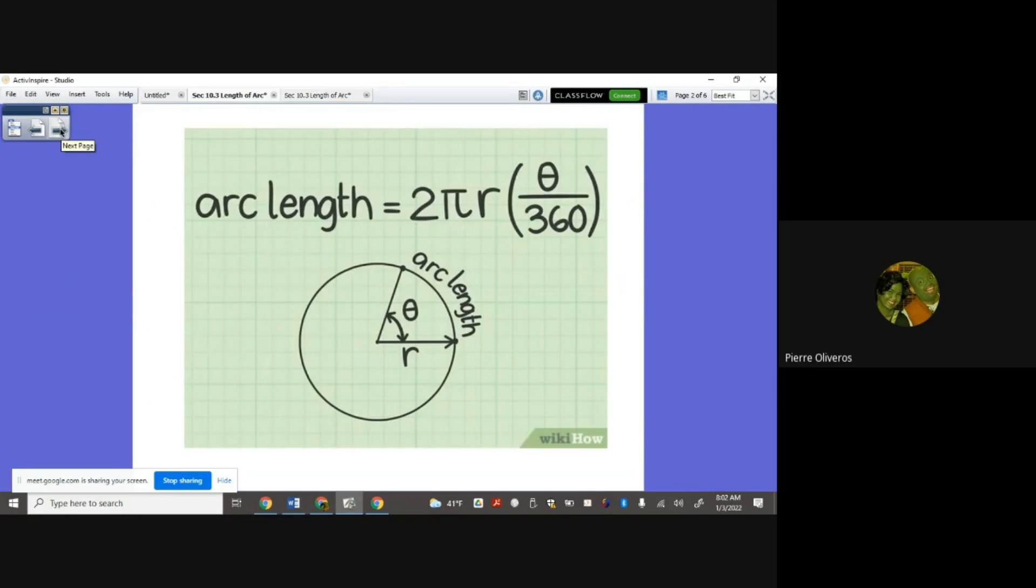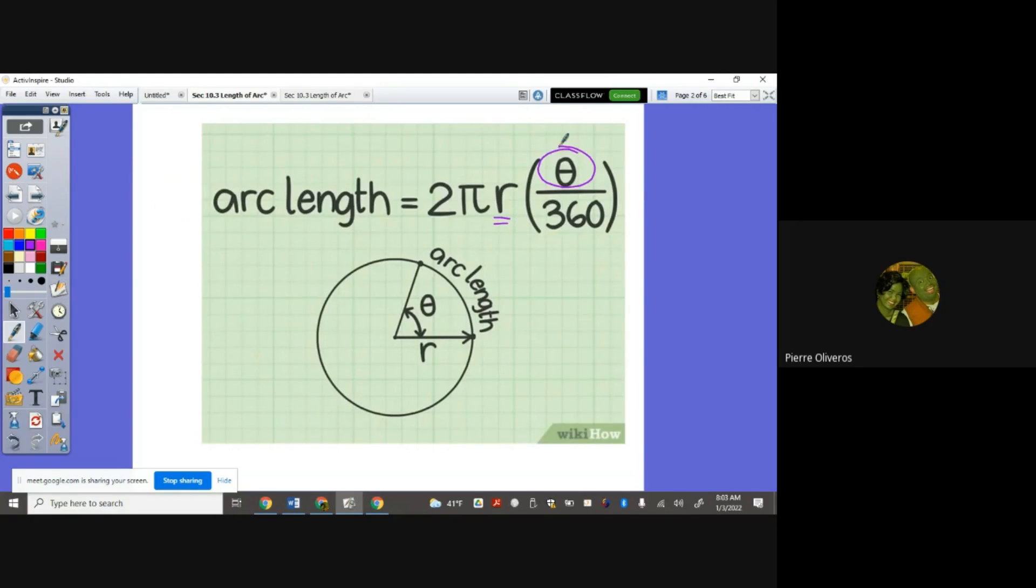For us to know the length of arc or arc length, we're going to use the formula 2πr. The 2πr is the formula for the circumference times the portion of the angle, the central angle, the theta, divided by 360 because the entire thing is a whole 360 degrees. So remember, this is your radius, and the theta here is the key. That's the central angle.